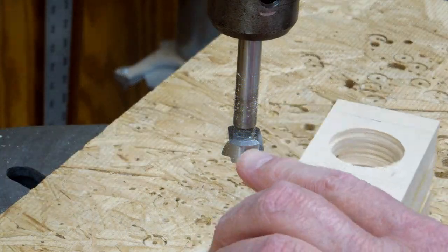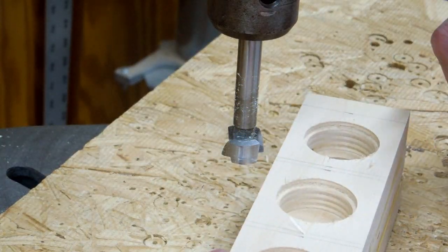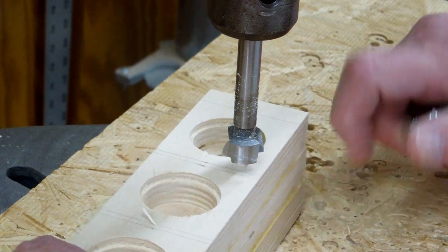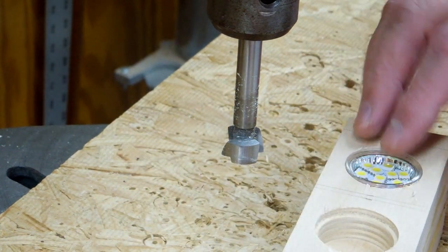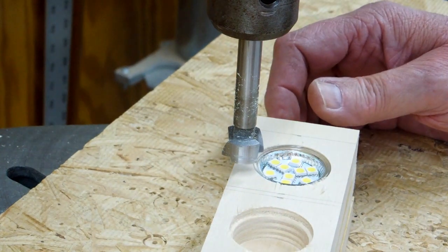The next hole is three quarters of an inch in diameter. It goes in one and three quarter inches deep. That allows that light bulb to fit all the way in there.